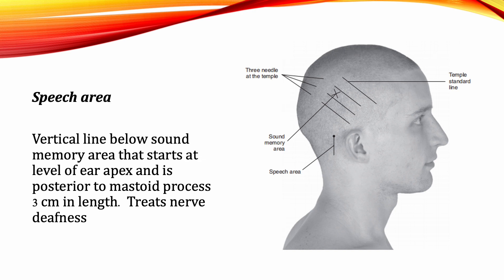Speech Area: This area is a vertical line below the sound memory area that starts at the level of the ear apex and is posterior to the mastoid process, 3 cm in length. It is used to treat nerve deafness.